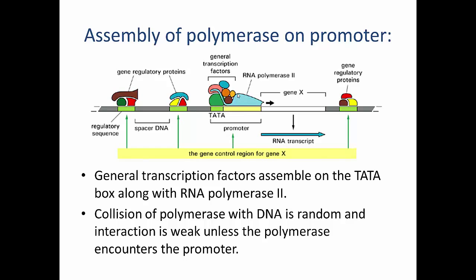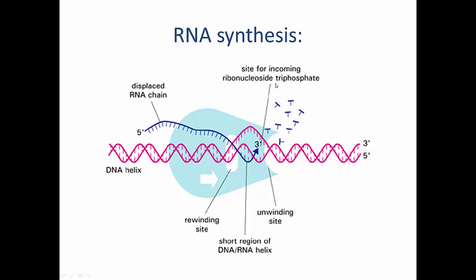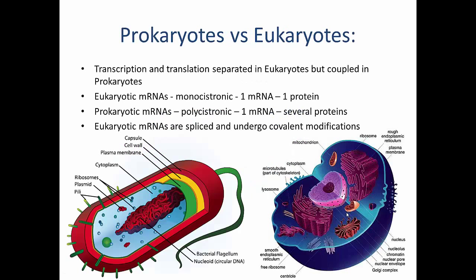Once the transcription machinery is assembled at the promoter, RNA synthesis proceeds as follows. A bubble is melted in the template DNA region into which the polymerase inserts itself, copying one DNA strand and synthesizing a complementary RNA chain. As the RNA chain elongates, it is displaced from the double helix and the helix reforms. Once transcription is finished, the full RNA strand is displaced from the DNA and the DNA double helix reforms.